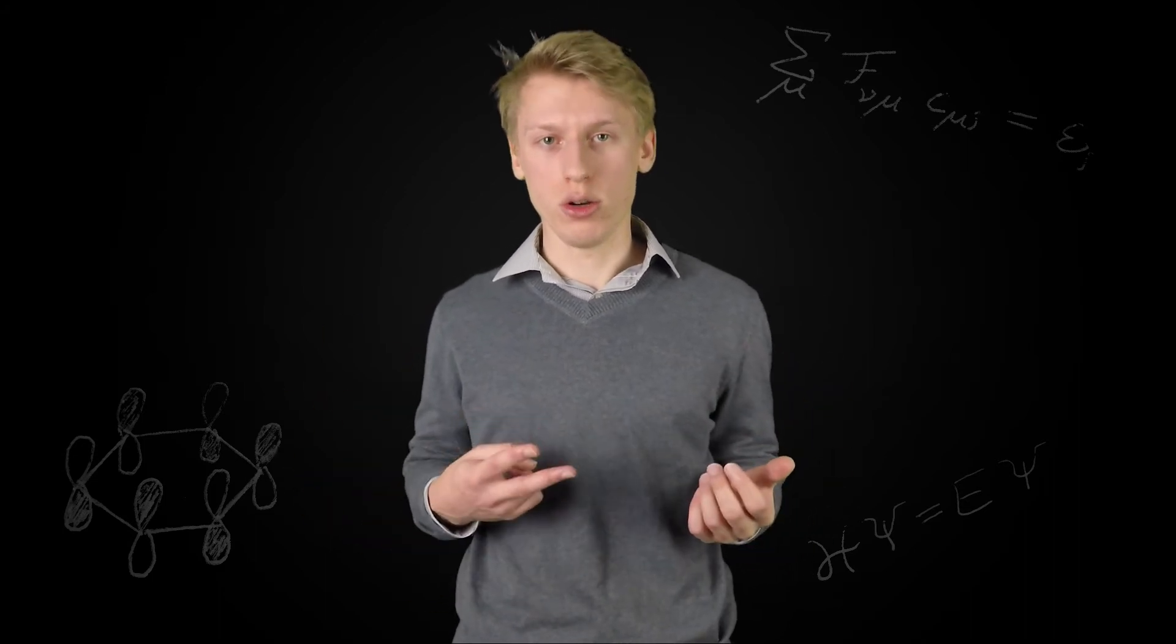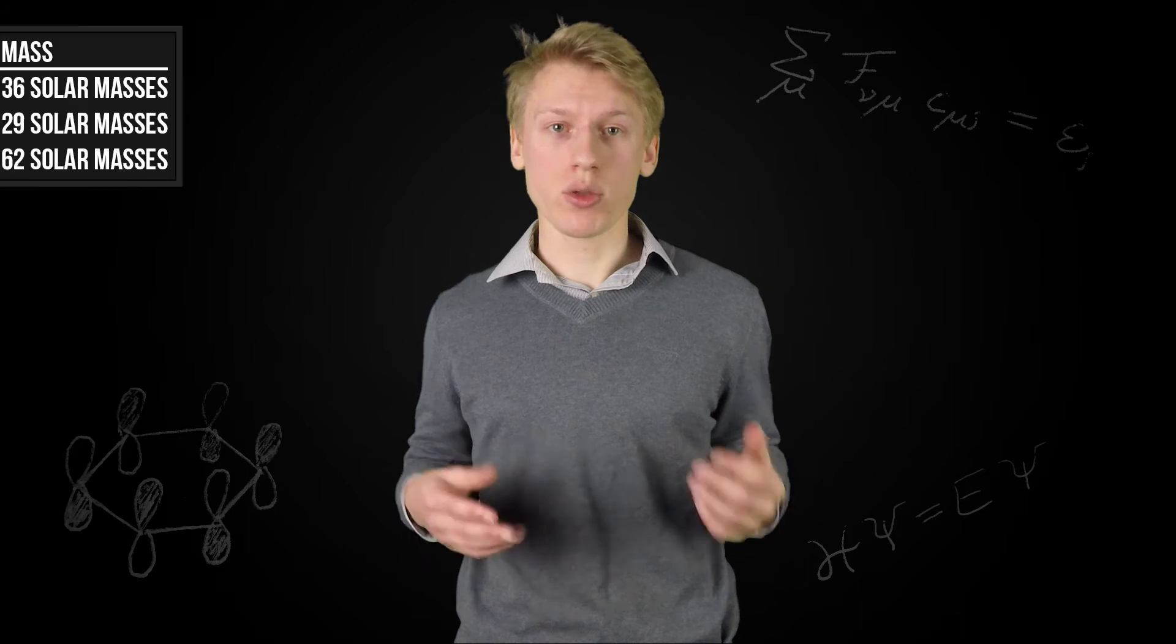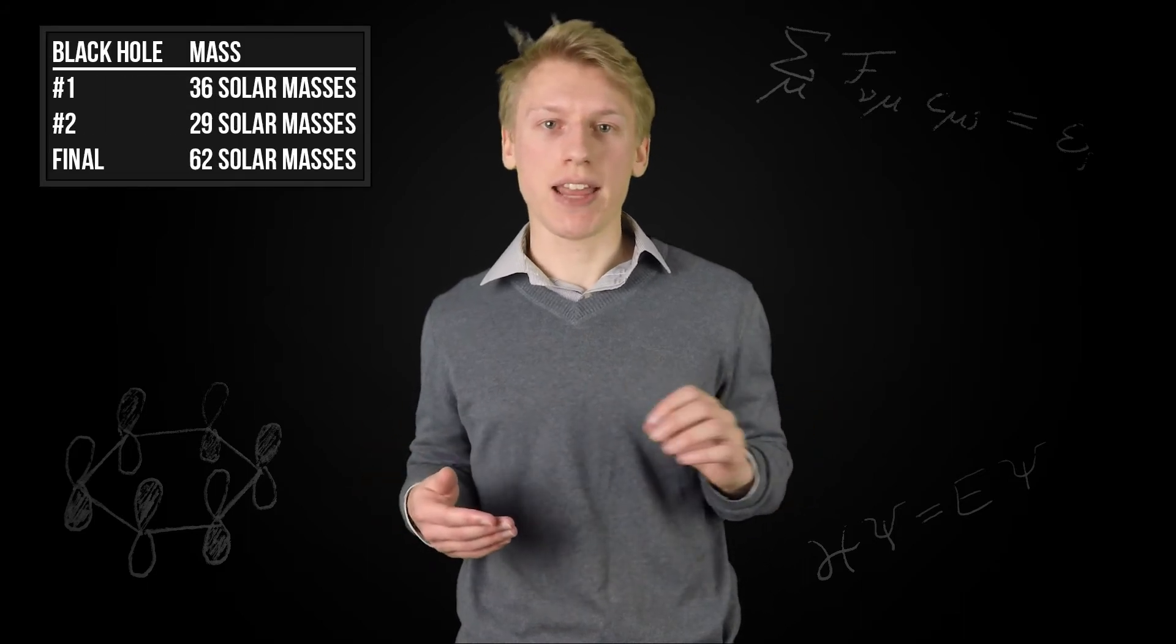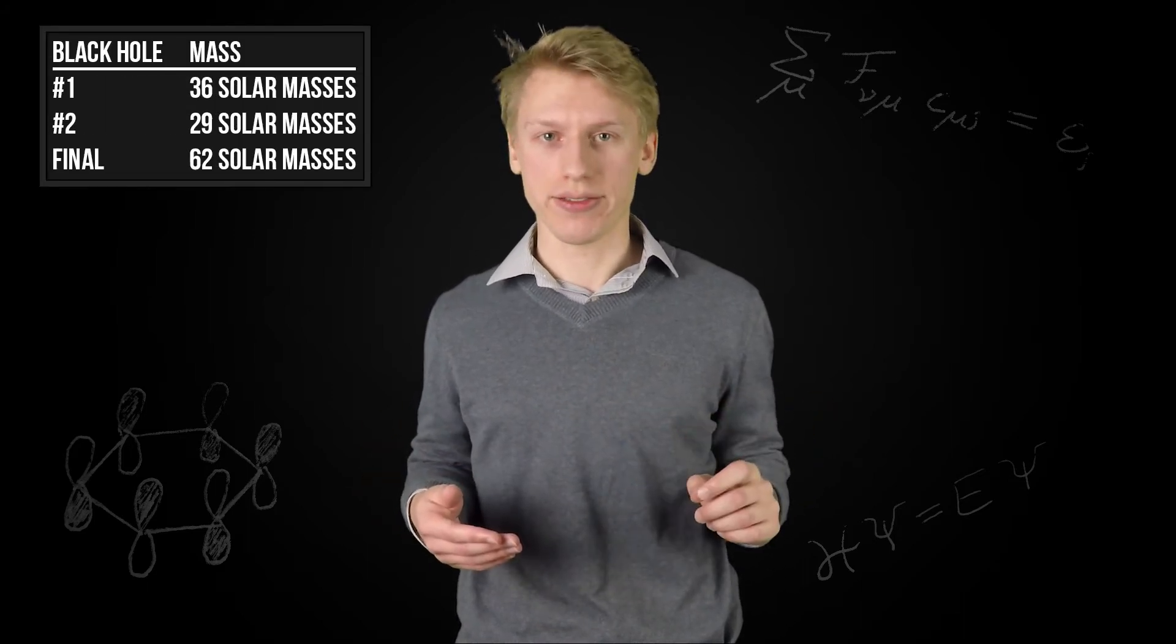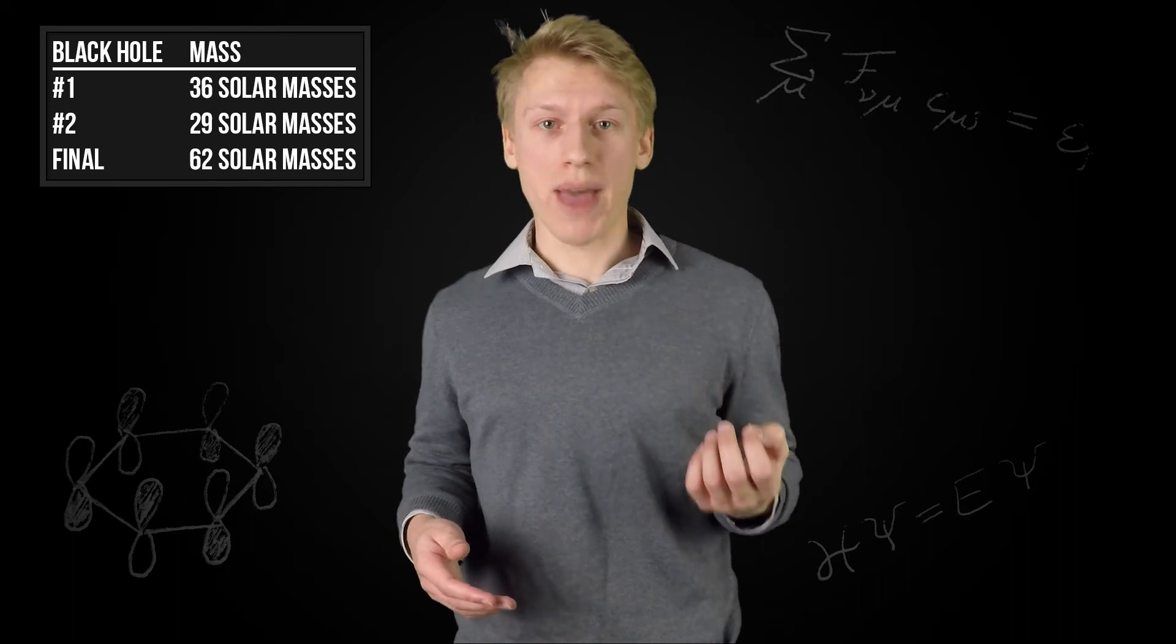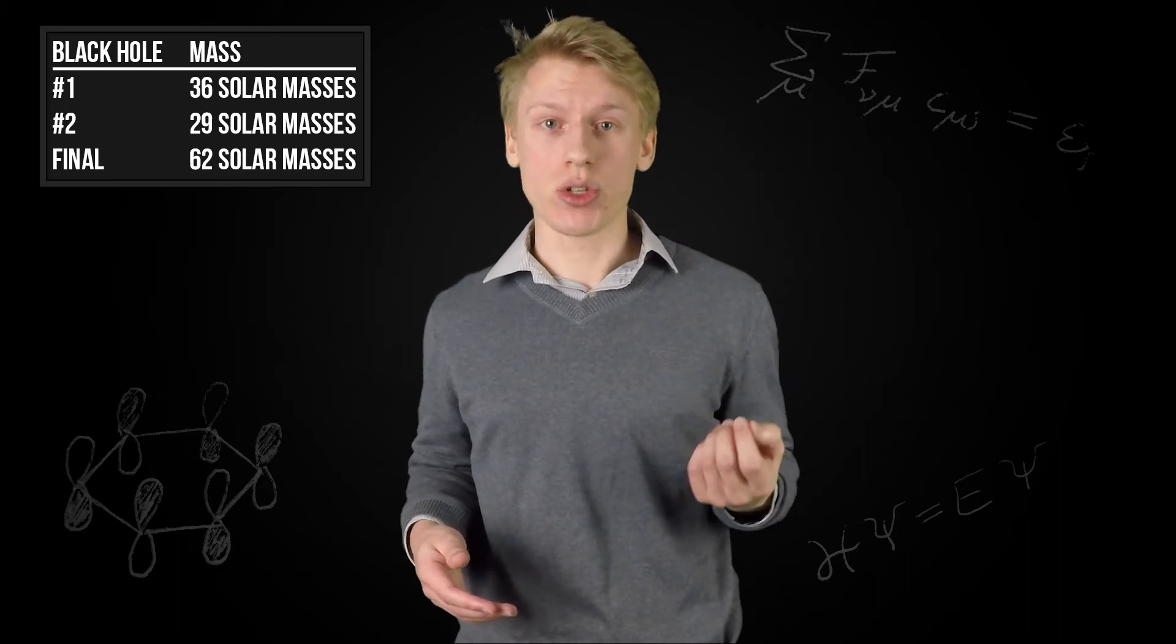Using general relativity to model the merger of two black holes, the masses of the two initial black holes were estimated to be 29 and 36 solar masses respectively, whereas the resulting black hole's mass was estimated to be 62 solar masses.